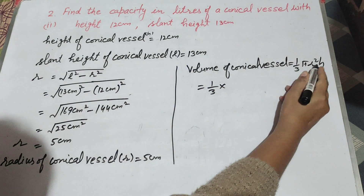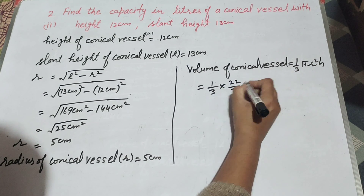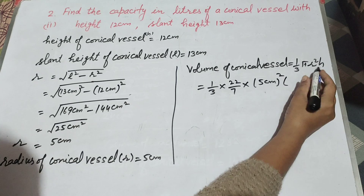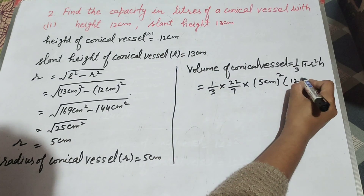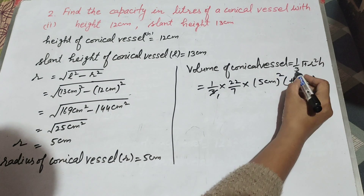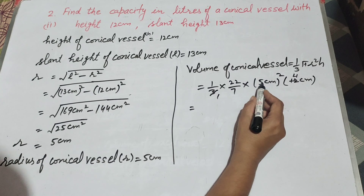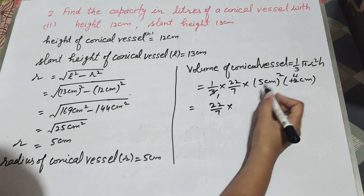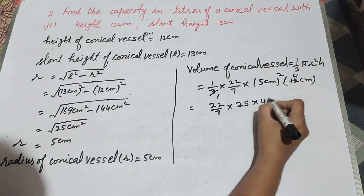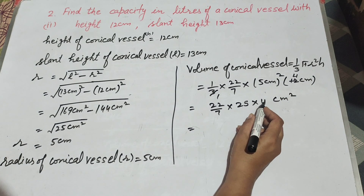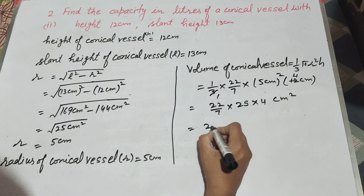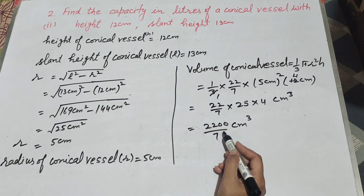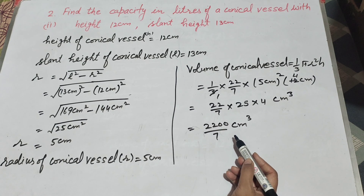Now we find the volume of conical vessel. Volume equals one-third pi r squared h. r squared is radius 5 centimeter squared, and h is height 12 centimeter. 3 and 12 are cancelled on the table of 3. It is equal to 22 over 7 multiplied by 25 multiplied by 4, giving 2200 over 7 centimeter cubed. That is the volume of the conical vessel.